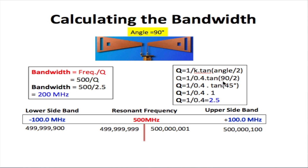90 degrees is the best angle to use for the Bowtie Antenna. So Q equals 1 over 0.4 times tan(45 degrees). The tan of 45 degrees is 1, so Q equals 1 over 0.4, which equals 2.5. Substituting Q = 2.5 into the bandwidth equation: 500 megahertz divided by 2.5 gives 200 megahertz.